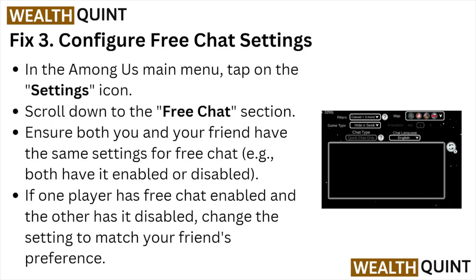Fix number three: configure the free chart settings. In the Among Us main menu, tap on the settings icon and scroll down to the free chart section. Ensure both you and your friend have the same settings — for example, both have it enabled or disabled. If one player has it enabled and the other has it disabled, change the settings to match your friend's preference.